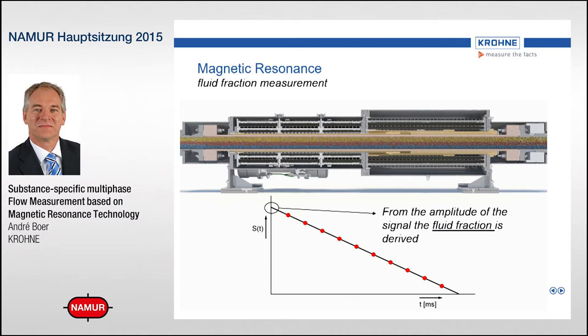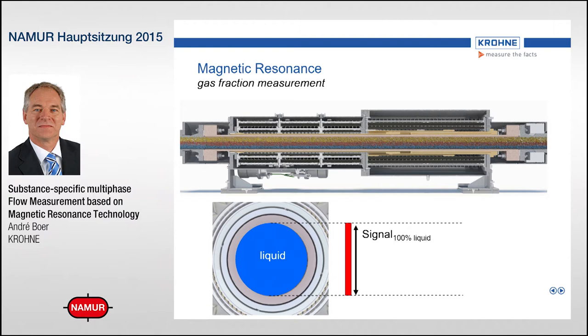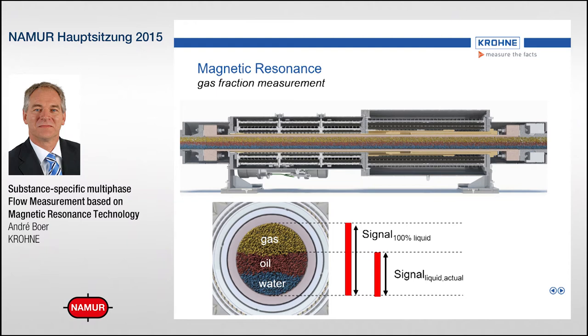It's not just the time it takes for tagged protons to flow out of the measurement section that we need — we also need the initial amplitude. When we tag a certain volume of protons, we look at the amplitude of the received signals. This amplitude is a measure of the fluid fraction. When the complete cross section is filled with liquid, we know what the signal would have been, as liquids give a very strong signal back. Part of the cross section was filled with liquid — the mixture of oil and water — and the rest was gas. So the missing amplitude corresponds to the gas fraction.